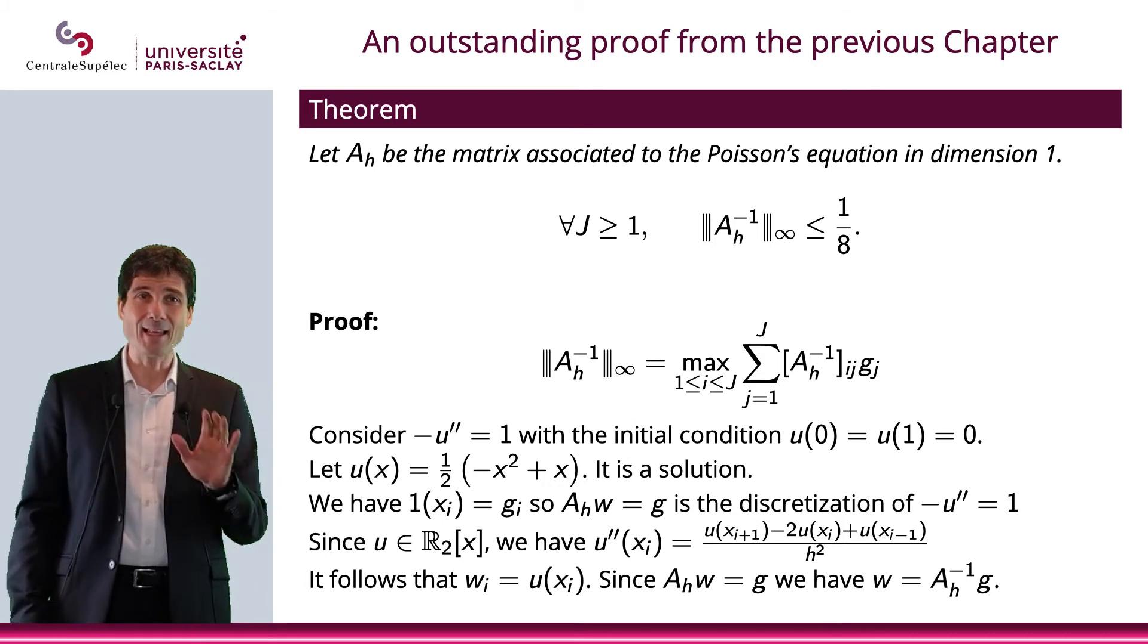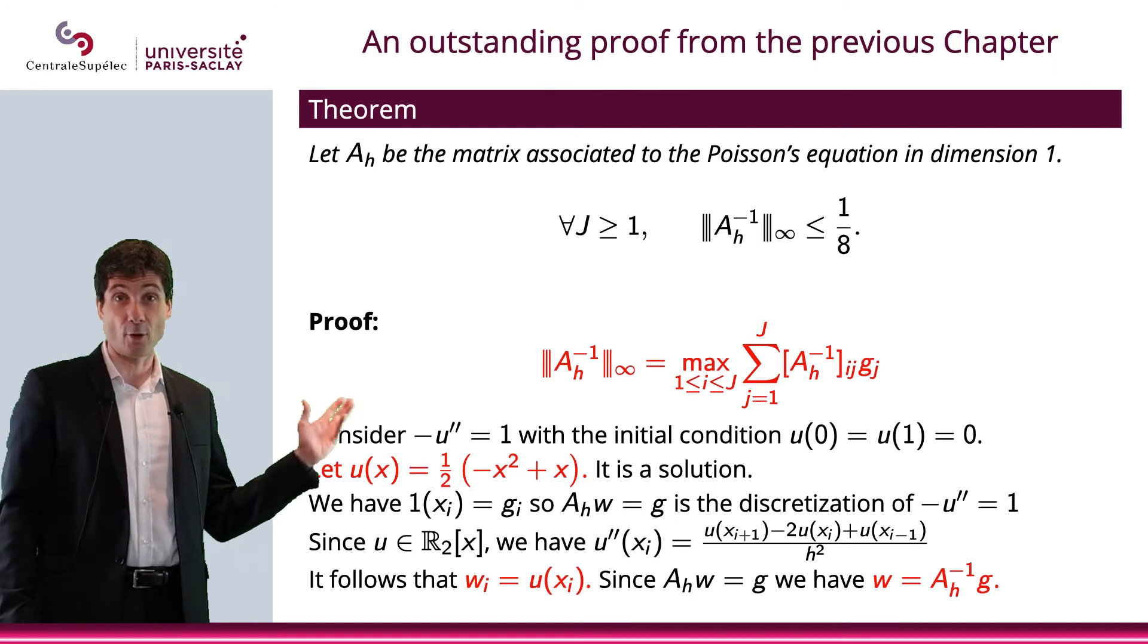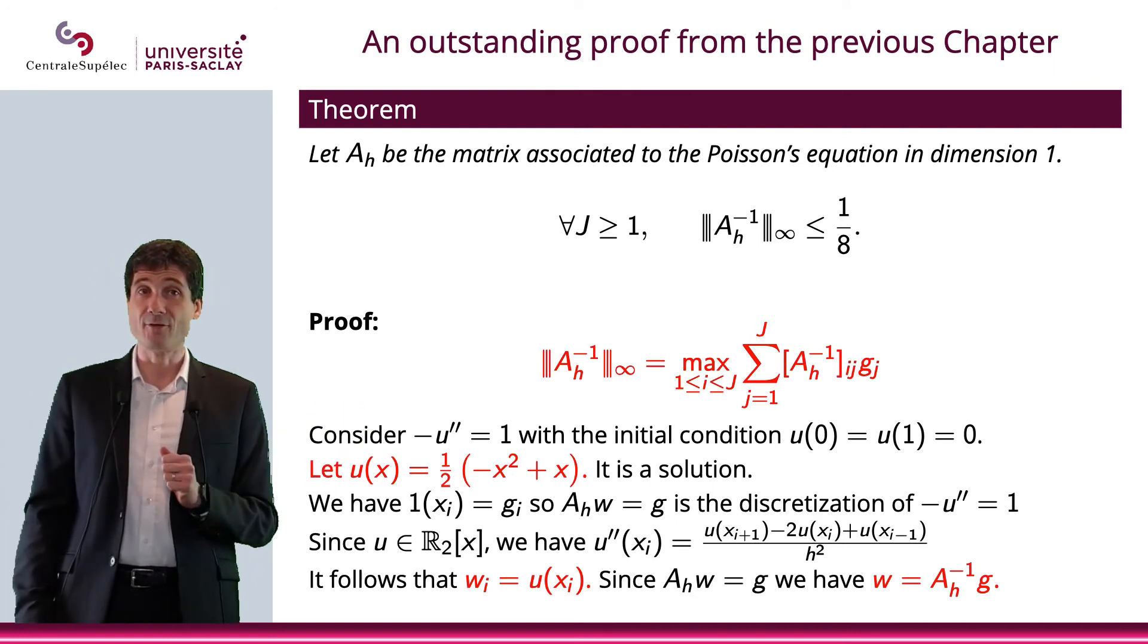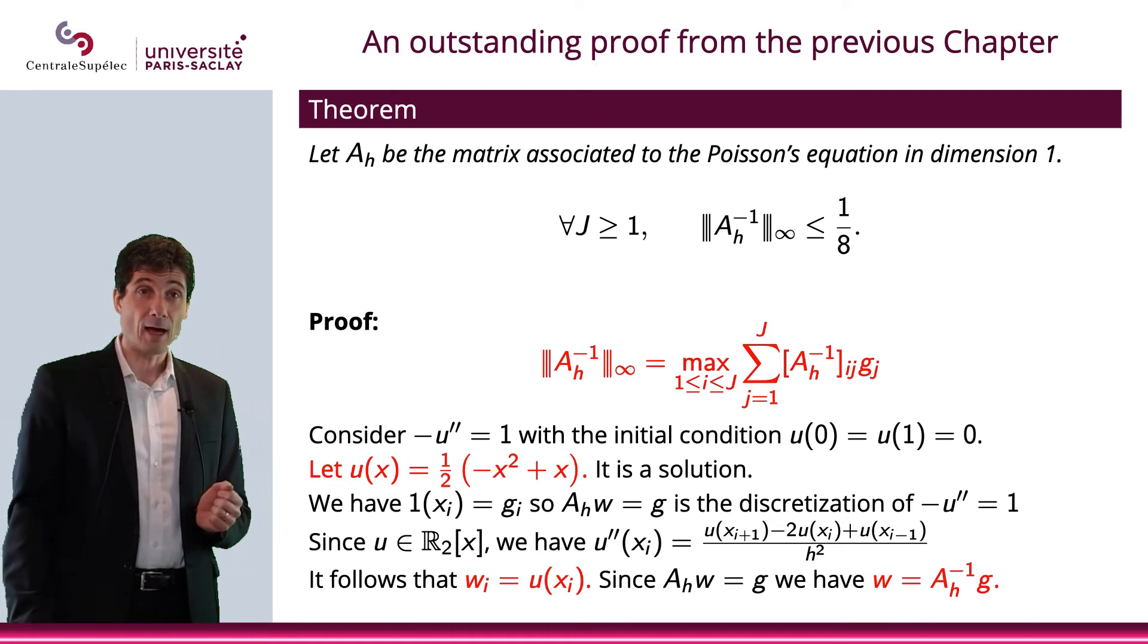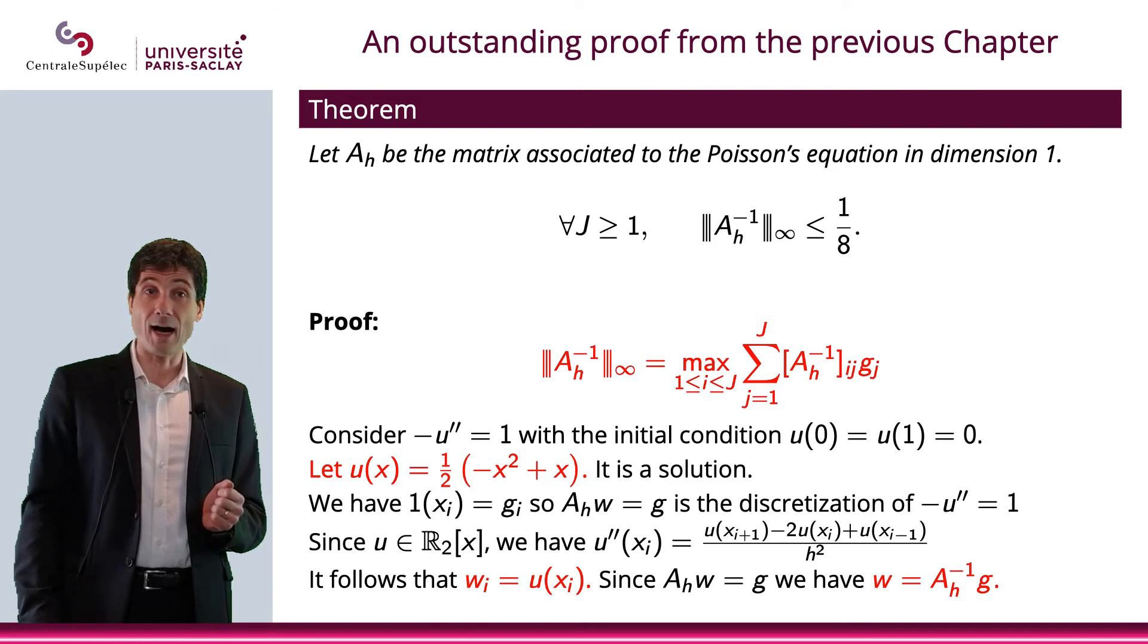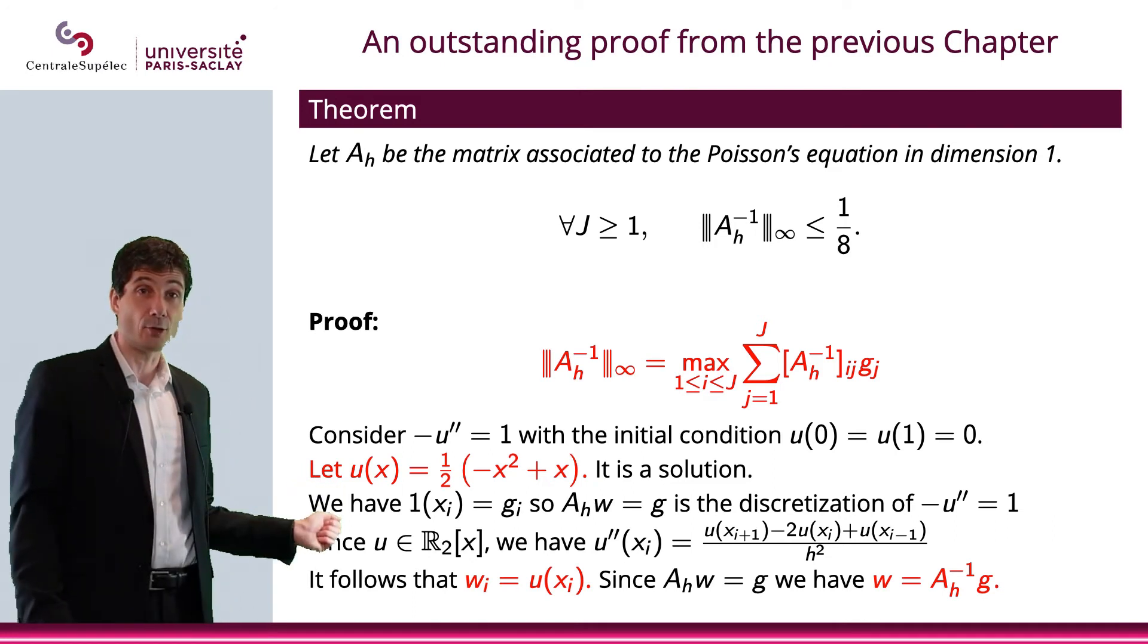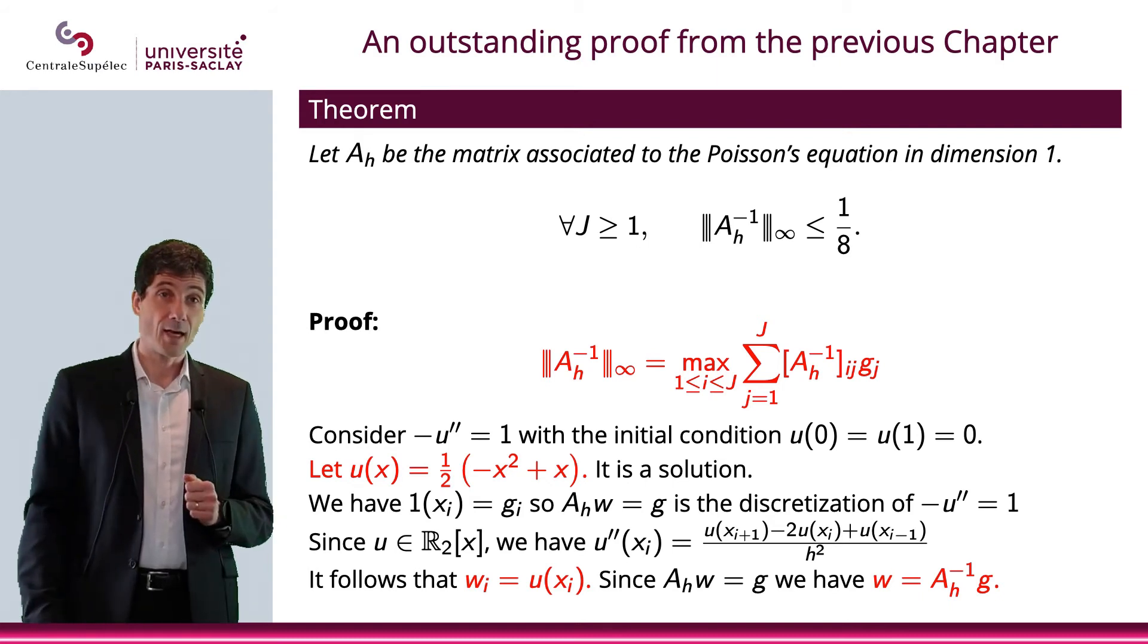Let me actually highlight what we have here. We have four things that are quite interesting. First, a formula that gives me the norm infinity of A_H inverse. Second, we have the function u. That is perfectly defined. That gives me numbers w_i. And we have that w is A_H inverse of g.